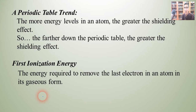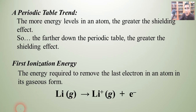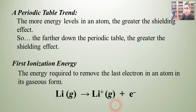First ionization energy is the energy required to remove the very last valence electron from an atom in its gaseous form. If we were to write an equation for first ionization energy of, say, lithium, we'd have to have lithium in its gaseous form — I know that looks funny because lithium is normally not a gas, but that's how it's defined. We remove an electron as a product, and what's left is lithium in its cation, or plus-one form, as a gas. For any other element, we'd just replace the symbol accordingly.